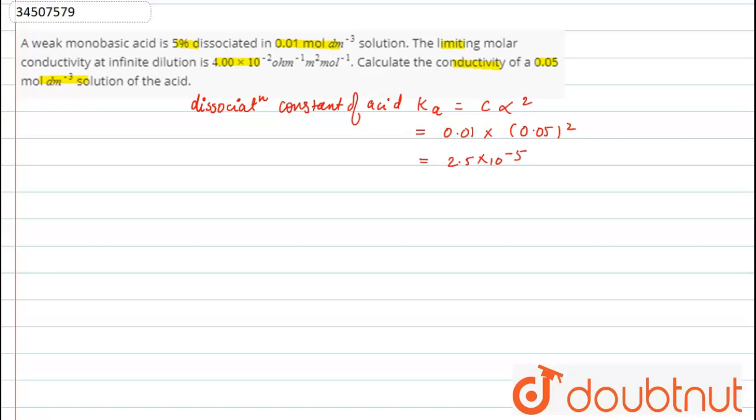Therefore, here alpha is when concentration is 0.05 m. So, that will be Ka equals to C alpha dash square.